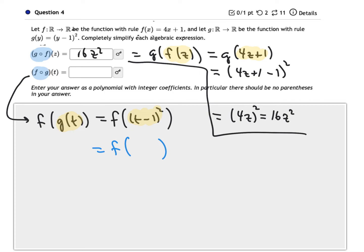And the rule for f up here says that whatever you put in for f, you should multiply it by 4 and add 1. So if you put t minus 1 squared, that yellow blob into the f function, the result will be 4 times t minus 1 squared. So in other words, 4 times what you put in plus 1.